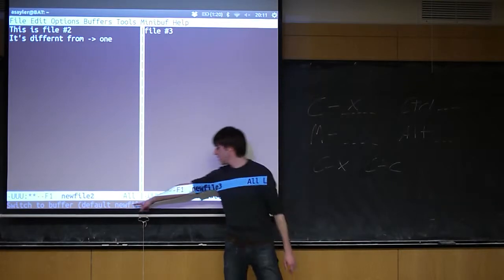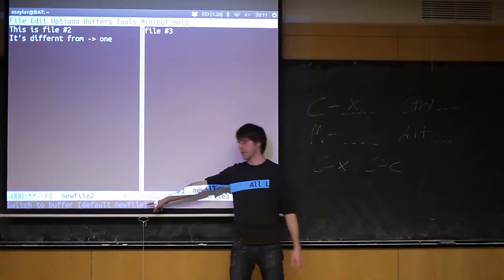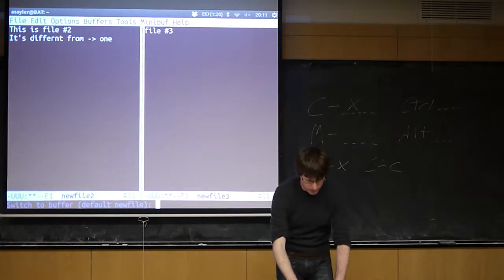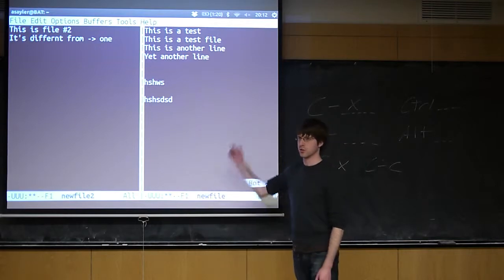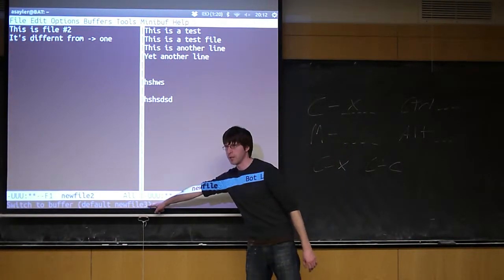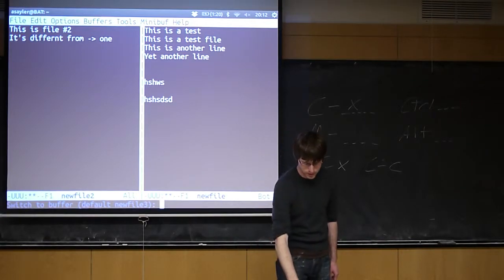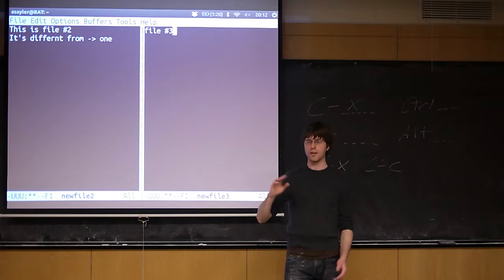The other buffer in this case by default is another one that's not currently open. It's saying by default we'll do that. If I just hit enter, it'll do whatever the default is. If I hit enter, it'll switch it back to the other one. Control-X B again, this time the default will be that one that's not open. Enter, it'll switch back to that one.